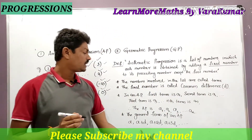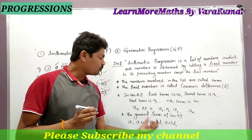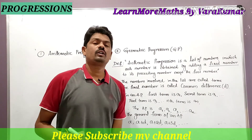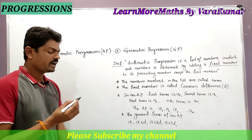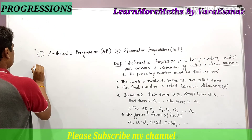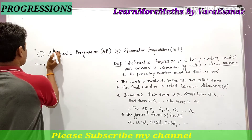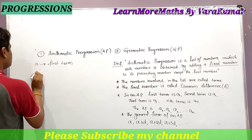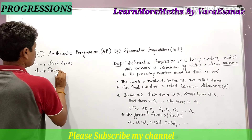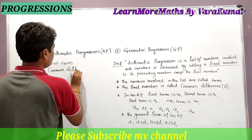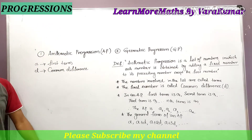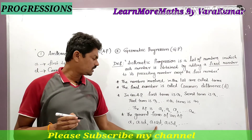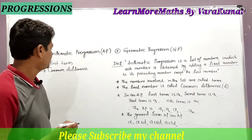This is the general form of an Arithmetic Progression. Here, 'a' is the first term and 'd' is the common difference. So the first term is 'a', second term is a+d, third term is a+2d, fourth term is a+3d, and so on.